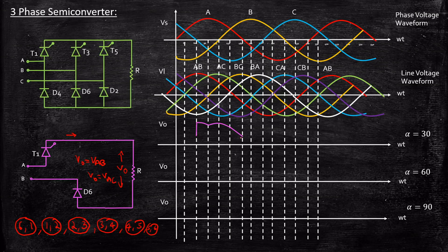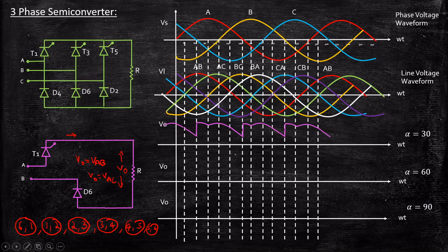Once T1 is triggered, it conducts for 120 degrees. Starting at 60°, it conducts until 180°. At 180°, T3 is triggered, and the conduction pair becomes 2-3, producing the same nature of waveform. The cycle repeats: output follows Vab, then Vac, then when 2-3 conducts it follows Vbc, then Vba; when 3-4 conducts it follows Vca; when 4-5 conducts Vca; when 5-6 conducts Vcb. This is the nature of the waveform when alpha equals 30°.